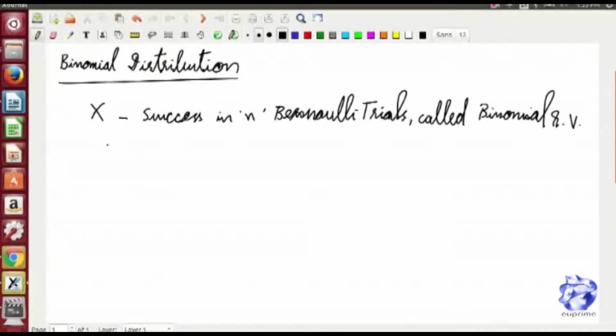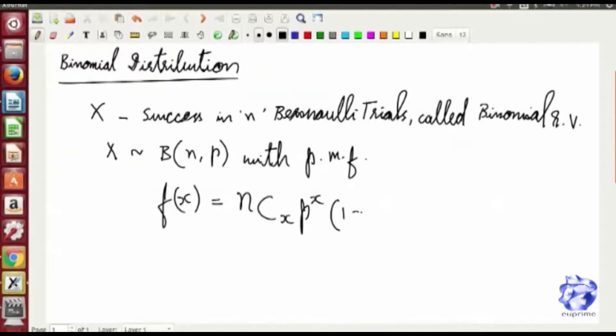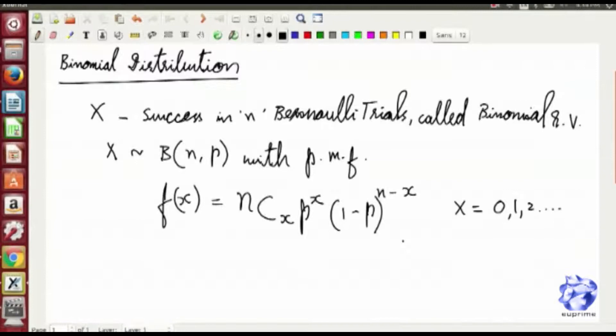Repeated Bernoulli distribution is basically binomial distribution, so X is success in n Bernoulli trials and X is equivalent to binomial distribution with parameters n and p. The only addition to the formula is the nCx term and the probability mass function.